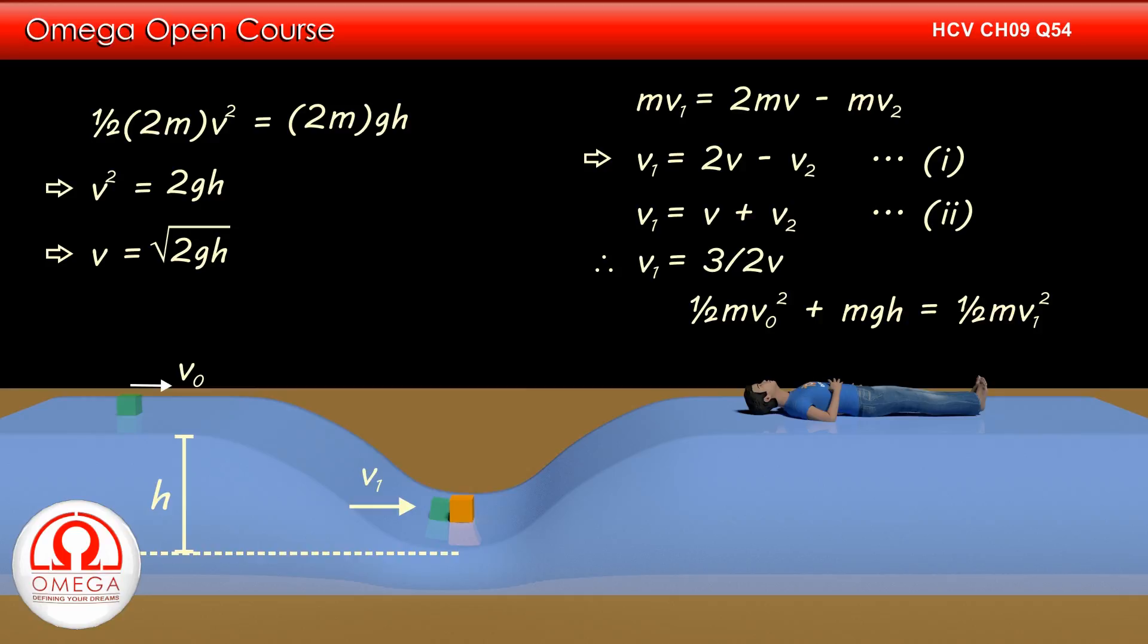Therefore, ½mv₀² + mgh must be equal to ½mv₁². Dividing both sides by ½m and putting the value of v₁, we get v₀² + 2gh = 9/4 v². Putting v = √(2gh), we get v₀² + 2gh = 9/2 gh.